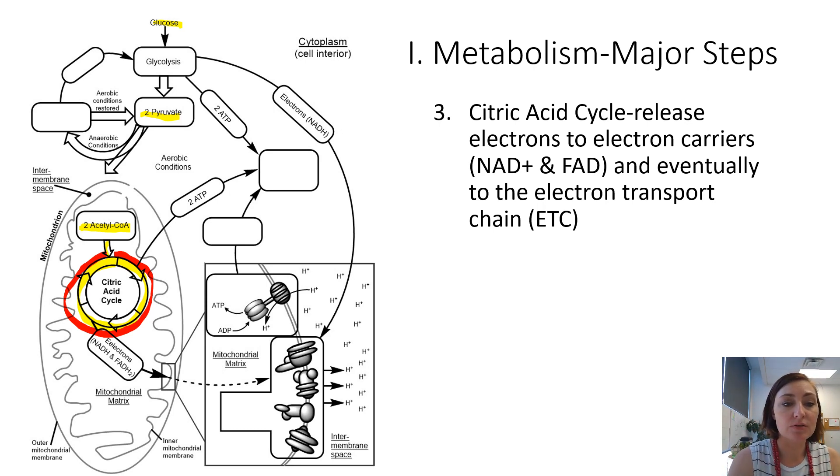The citric acid cycle is going to produce for us 2-ATP. Again, these are going to contribute right here to our total ATP numbers for one molecule of glucose. So we produce a couple ATP, just like glycolysis produced a couple ATP. We're also going to release some of those high-energy electrons, and that's important.